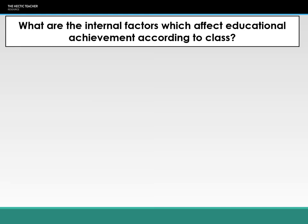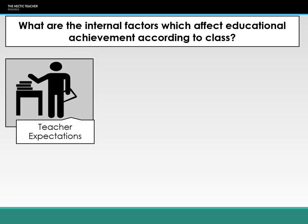When it comes to the internal factors which affect educational achievement by class, it can be broken down into three main areas. There are lots of different factors, but we've grouped them together to make things a bit more manageable. We're going to be looking, firstly, at teacher expectations — the roles and processes in schools and how they affect educational achievement by class.